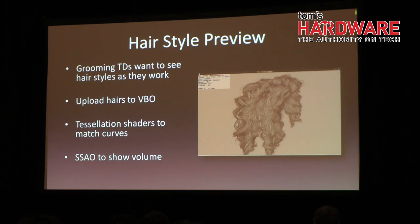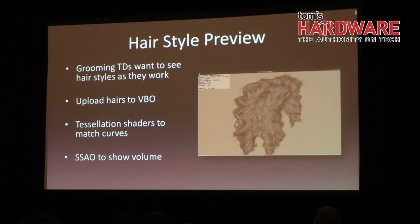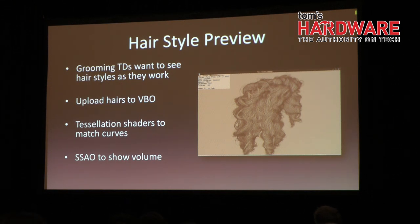The second requirement is that hairs have to be separated visually. This is not something you get out of a RenderMan renderer, because it's really for the purpose of identifying a particular problem with hairs. And thirdly, it had to show the volume of different parts of hair as being distinct from one another. So in order to match the shape of individual curves, the hairs are subdivided using a tessellation shader. Without tessellation shaders, the hair preview curvature wouldn't match the renderer and, as a result, wouldn't be useful as a preview tool.